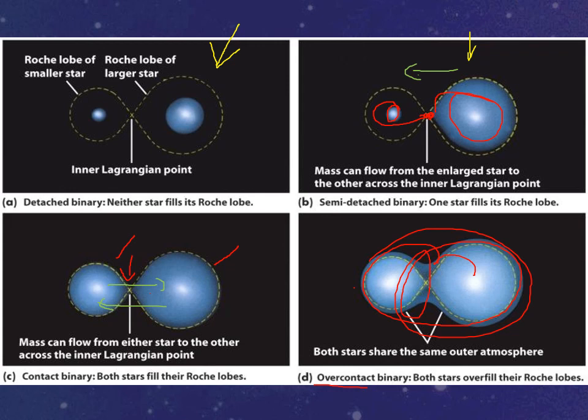And then with the over-contact binary, both stars can actually lose mass into this common envelope. And so that's how these contact things work, or semi-contact.